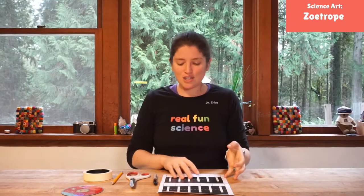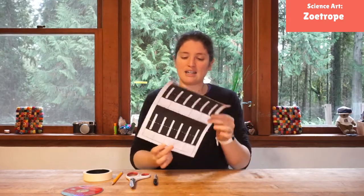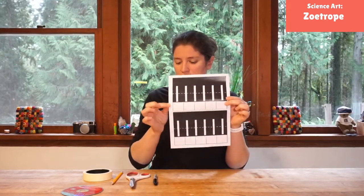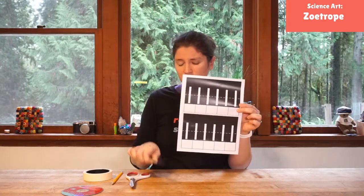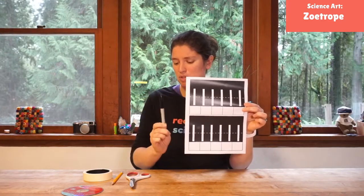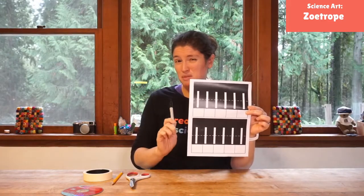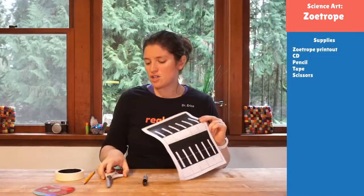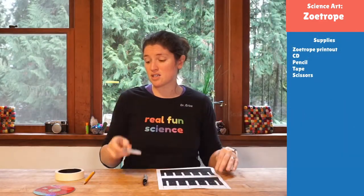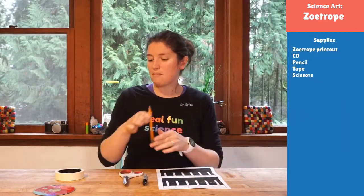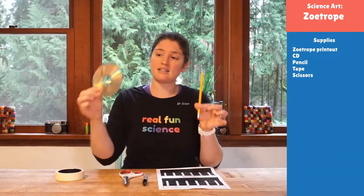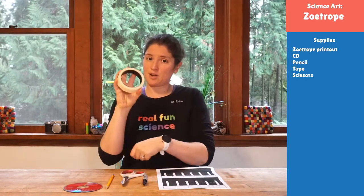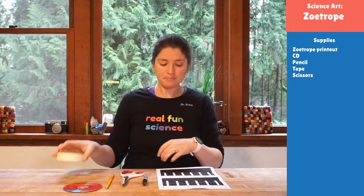What you need today is a printout of our little zoetrope template, a marker or sharpie of some sort so you can see it really well, some scissors, a pencil, and a CD which is what's going to make it spin — and then we're going to put it all together with some tape.